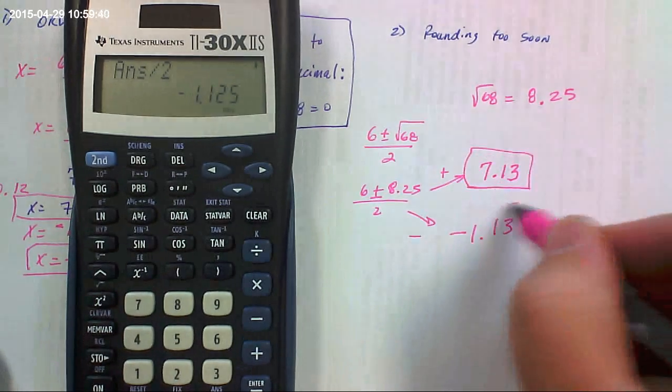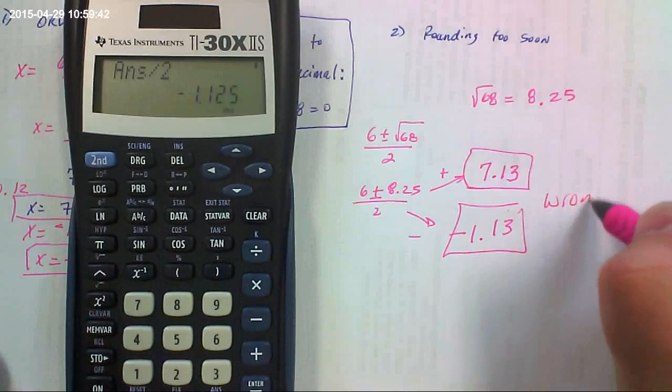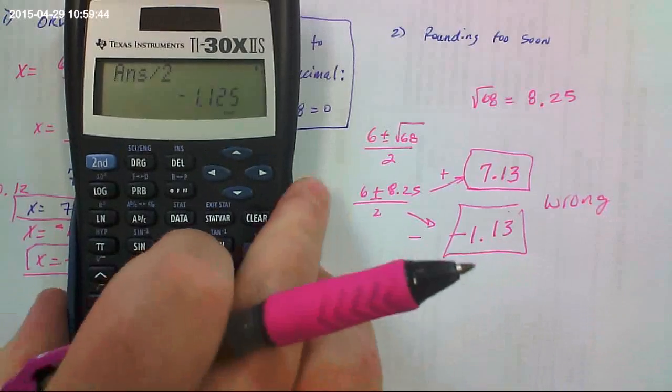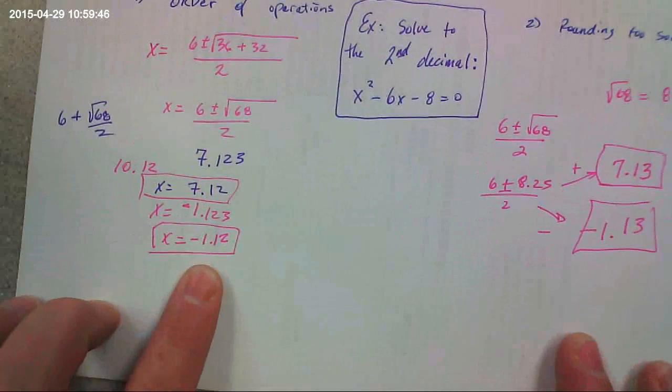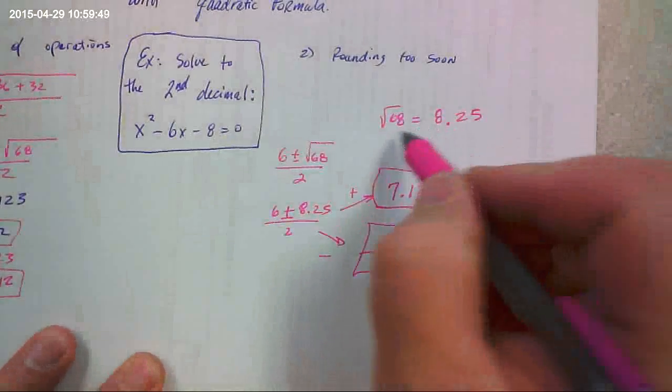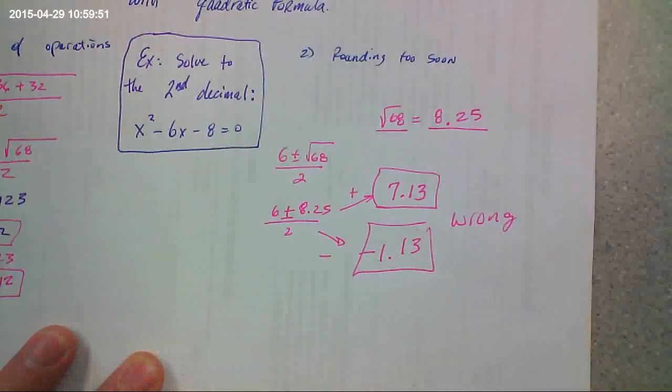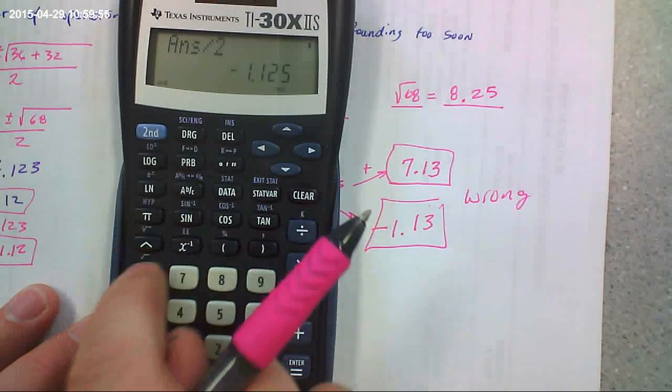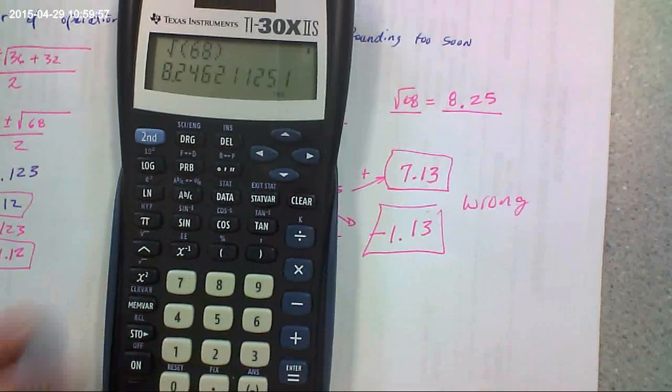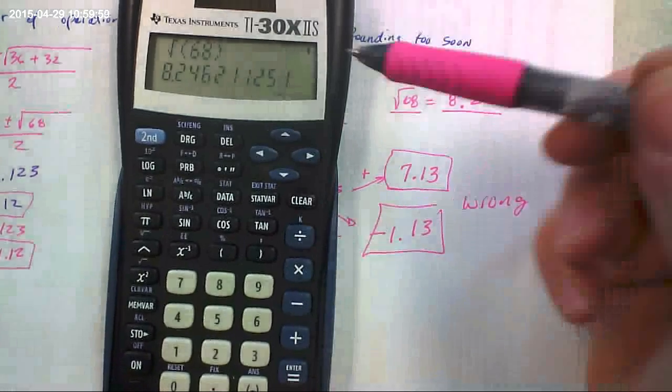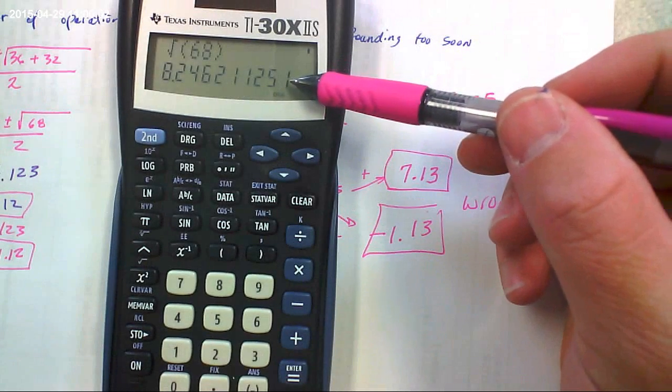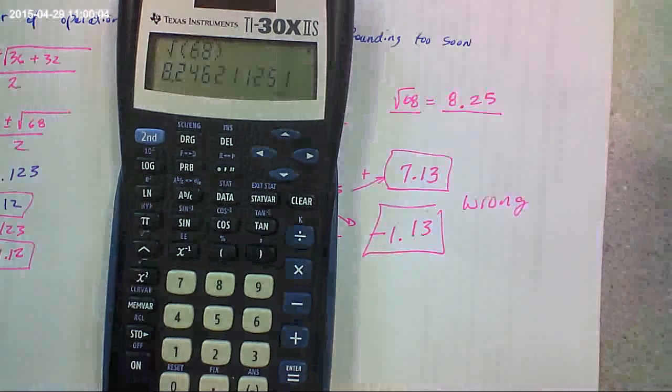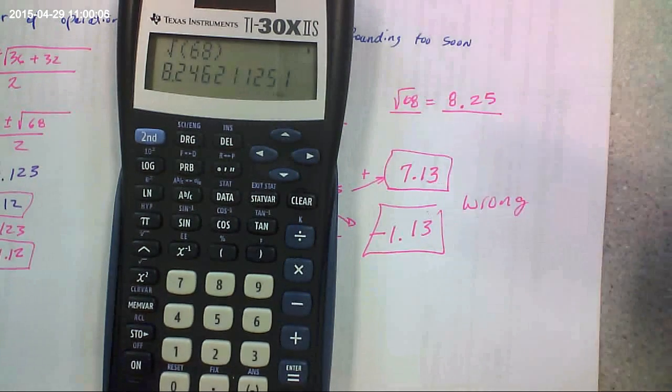These are both wrong. They are not correct to the second decimal place. These are. And the mistake that's made is the square root of 68 is not 8.25. The square root of 68 is close to this, but it's actually an irrational number, and this decimal will continue without repeating or terminating.